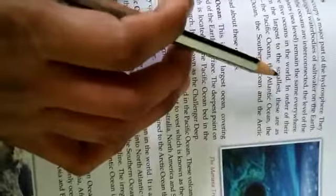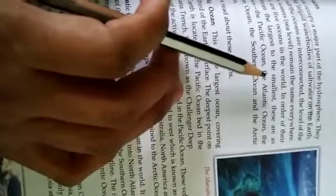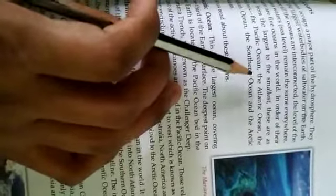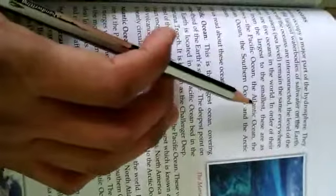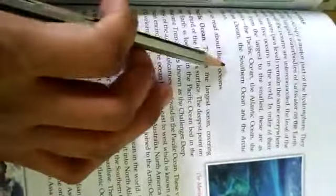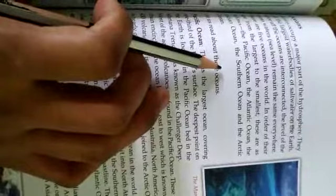There are five oceans in the world. In order of their size, from the largest to the smallest, these are as follows: The Pacific Ocean, the Atlantic Ocean, the Indian Ocean, the Southern Ocean and the Arctic Ocean.